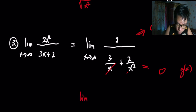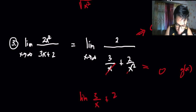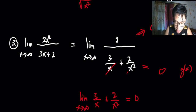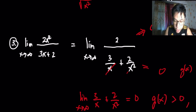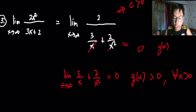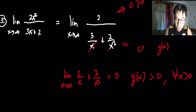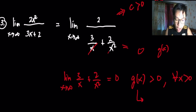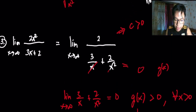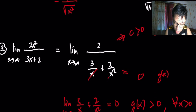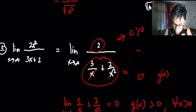The denominator g(x) approaches 0, but note that g(x) is greater than 0 for all x greater than 0. Since we are considering x approaching positive infinity, g(x) approaches 0 through positive values. We have a positive constant in the numerator and the denominator approaching 0 through positive values, so by the infinite limits result from the previous video, the answer is positive infinity.